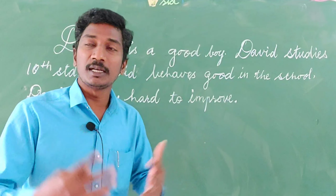So what shall we do to correct it? Let me read it: David is a good boy. David — what kind? Whether it is masculine or feminine? Yes, you are right. David is a man, a boy, male. So what can we do here? Instead of being repeated, we can cut off 'David' and use 'he'. He studies 10th standard. He behaves good in the school. He works hard to improve.